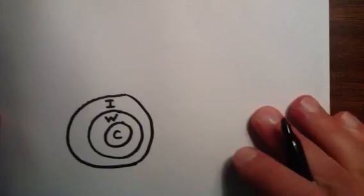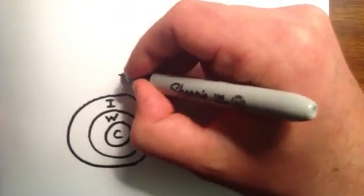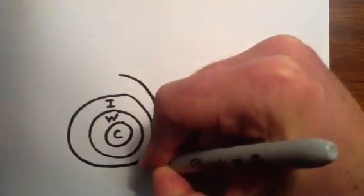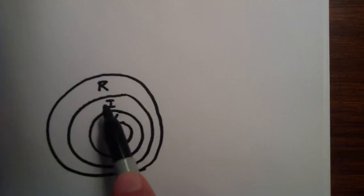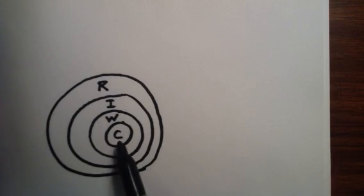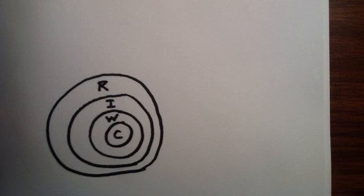Going back to the diagram, we can draw one more circle. And this circle represents all the rational numbers. Now the rational numbers contain all of the integers, whole numbers, and counting numbers. In addition to those, it contains numbers that can be written as ratios that don't fall into these smaller circles.